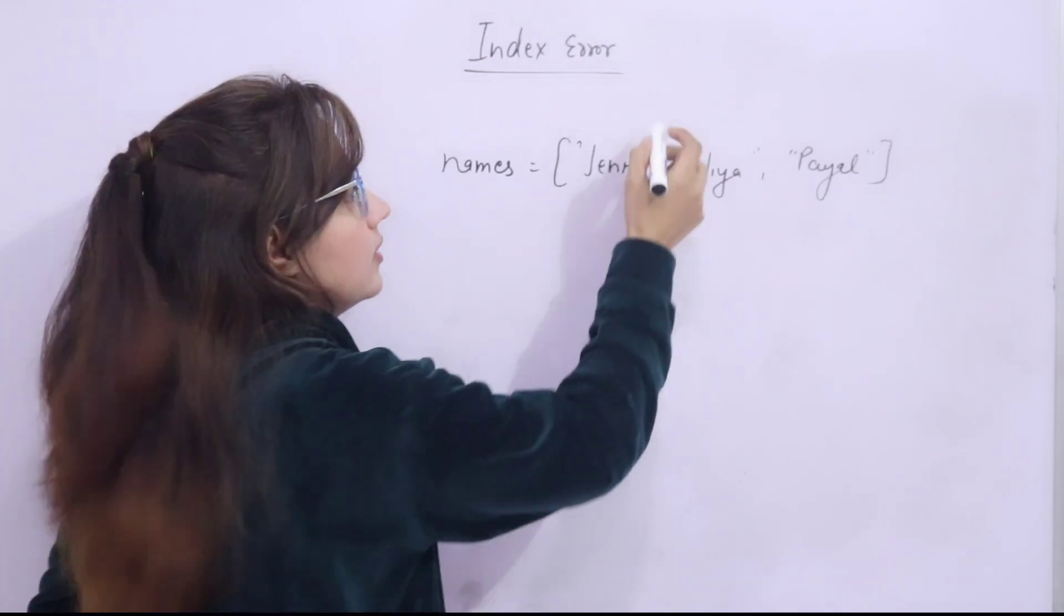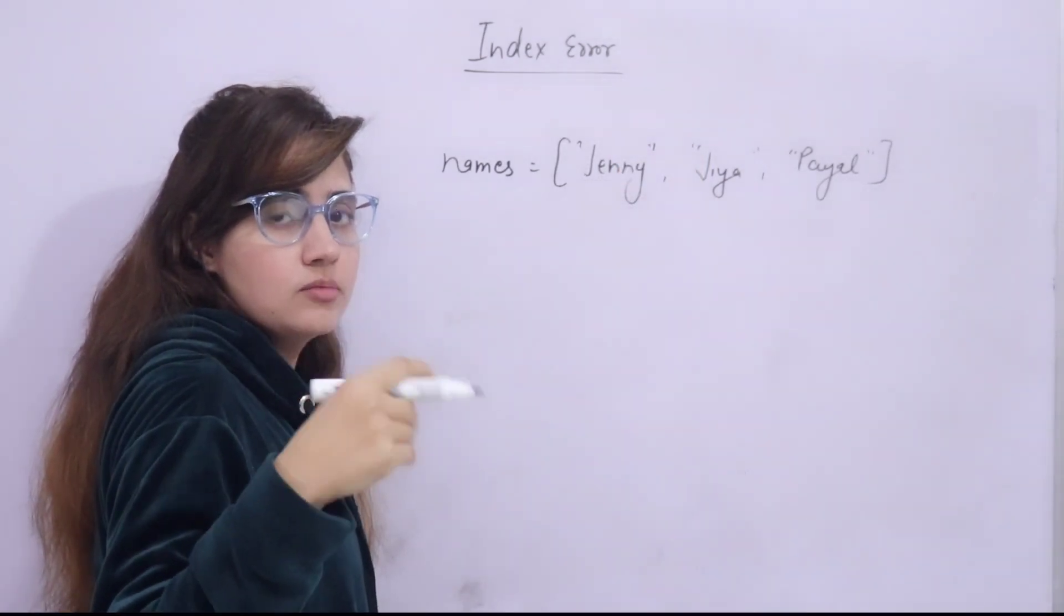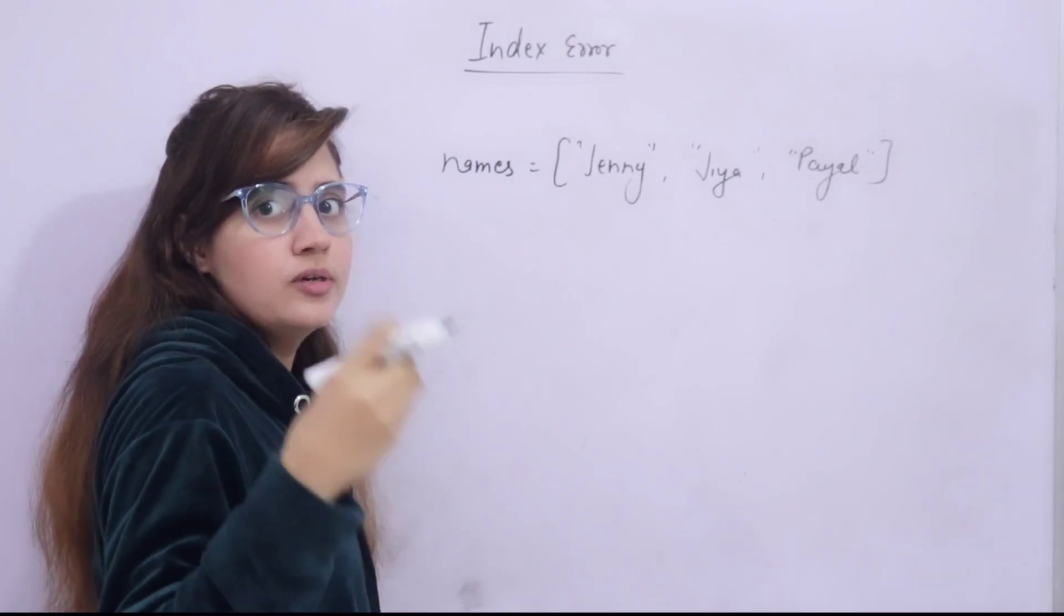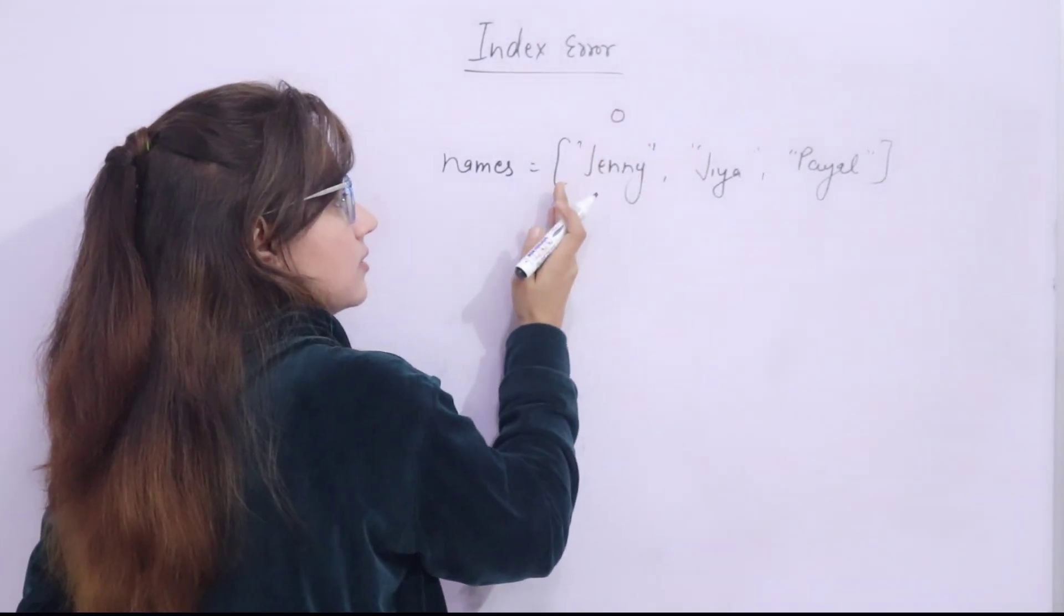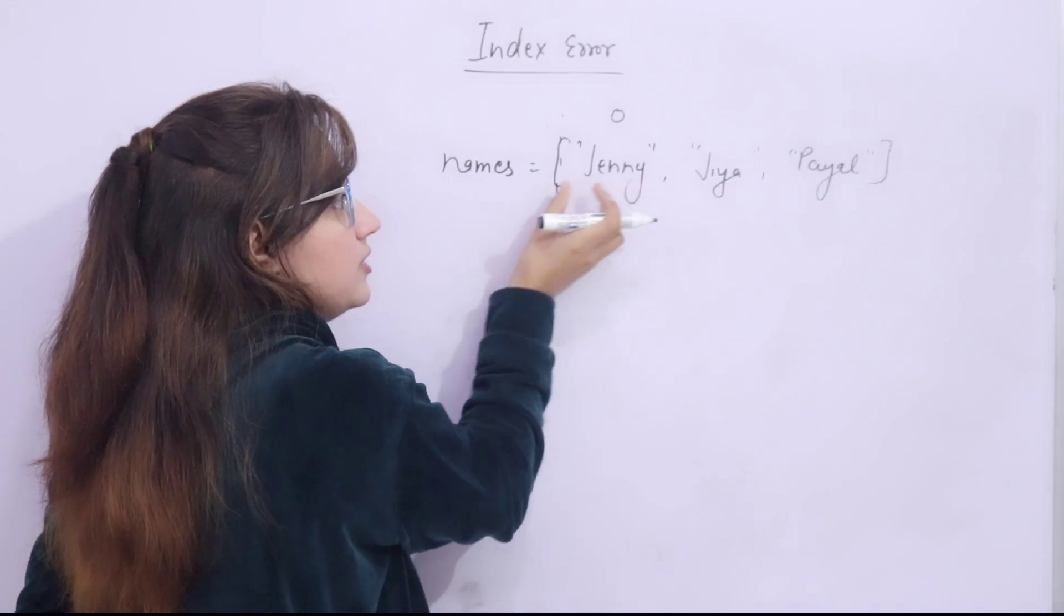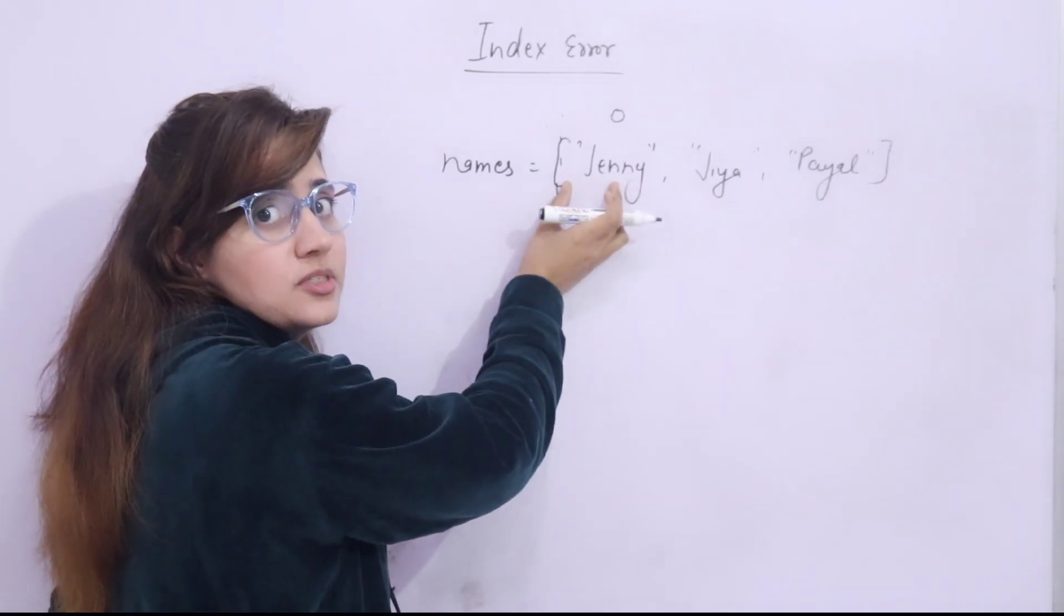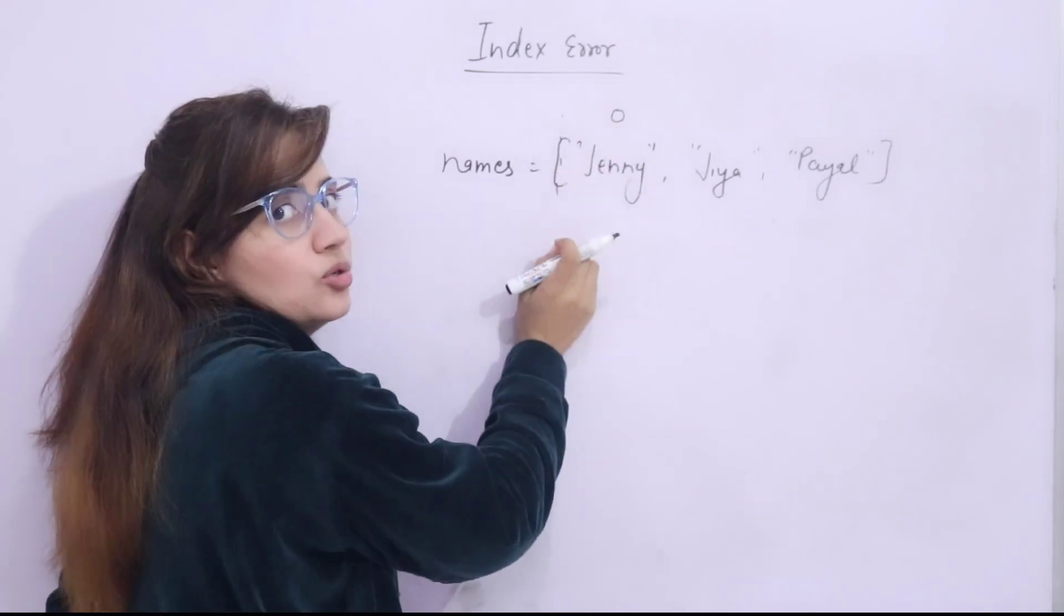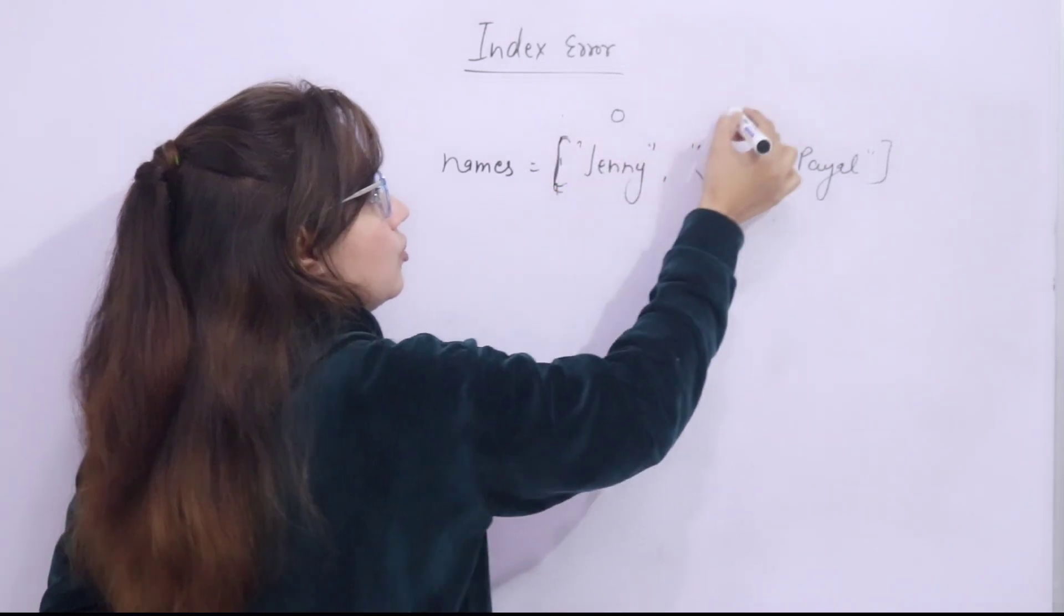So index of this would be, index started from 0. For arrays also, for list also, in programming language generally index start from 0. Because it is shifting from starting, this is starting, offset from starting. So this item is, from starting, shifting of this as, the offset of this item is 0, nothing. That is why it's 0. It's not position like 1, 2, 3, no. So 0, 1, 2.